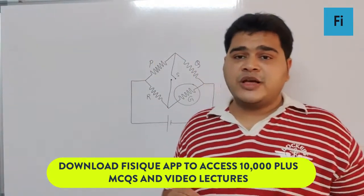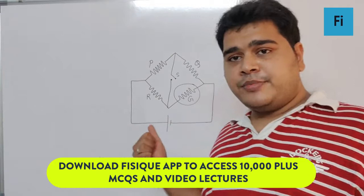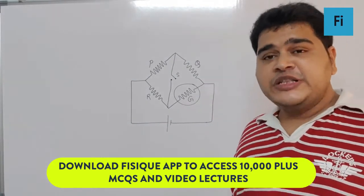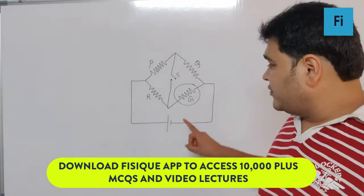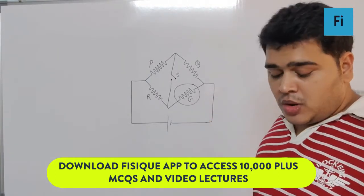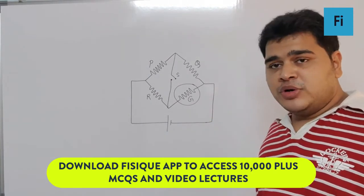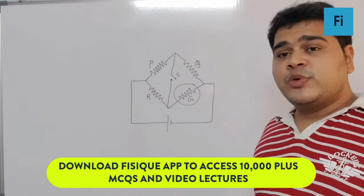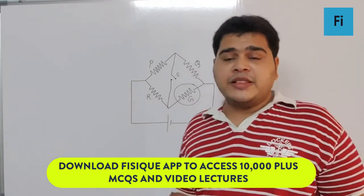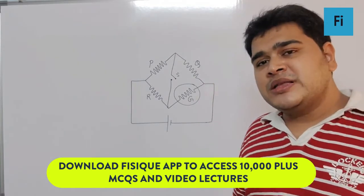As the question says, the figure shows a circuit diagram of a Wheatstone bridge to measure the resistance G of the galvanometer. The relation P/Q = R/G will be satisfied only when—I'm sure you understand this.